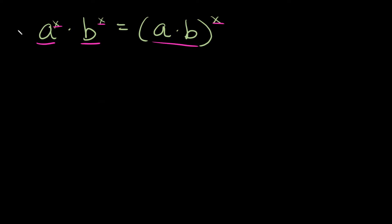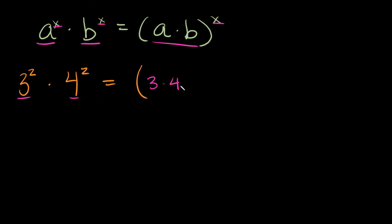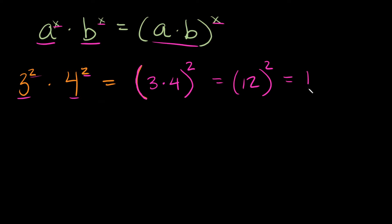Let's jump into the first example. If we had 3 squared times 4 squared, we're going to multiply the bases together — so 3 times 4 — and then raise them to the same exponent, which is 2. Three times four is 12, and 12 squared is equal to positive 144.